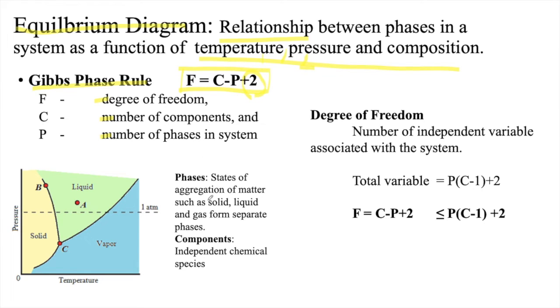What are phases? States of aggregation of matter such as solid, liquid, and vapor. What is a component? An independent chemical species. What is degree of freedom? The number of independent variables associated with the system.